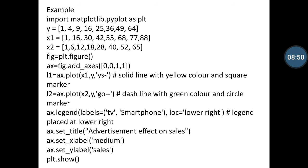Here the legend is placed at lower right side of the graph. Then you can represent the graph name as ax.set_title('Advertisement effect on sales') and set_xlabel('medium') and set_ylabel('sales'). And then you can use plt.show() method and then execute it.